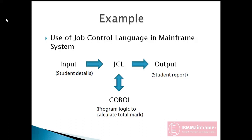In this JCL, we have to provide all the necessary details which are required for the Z/OS operating system to execute the COBOL program. What are those details? Details like input file name, output file name, and if the output file is new, we have to define the size of the file. Also other system-related information which is required for Z/OS to execute the COBOL program.